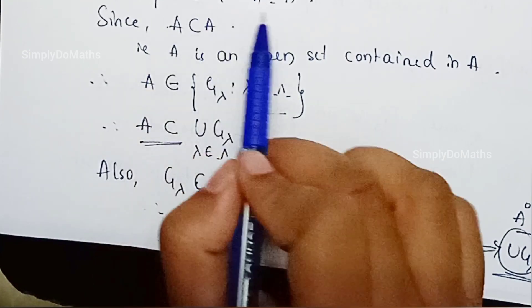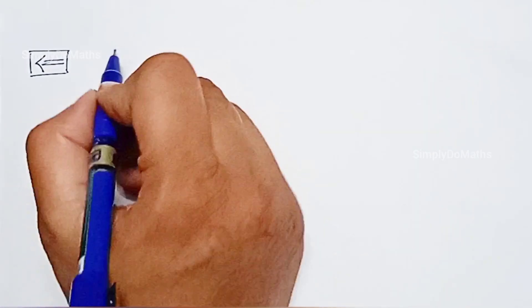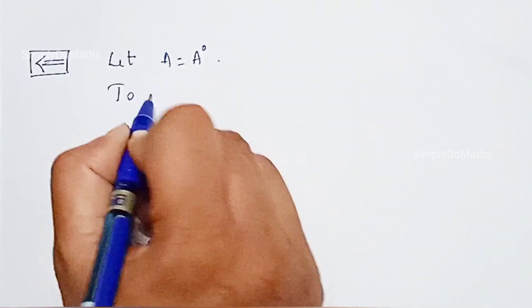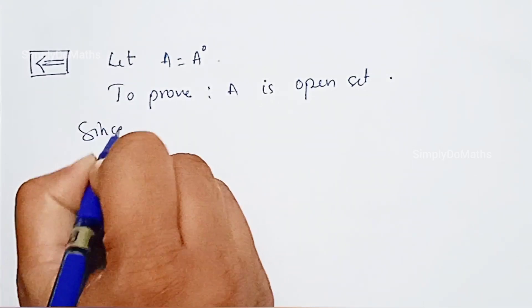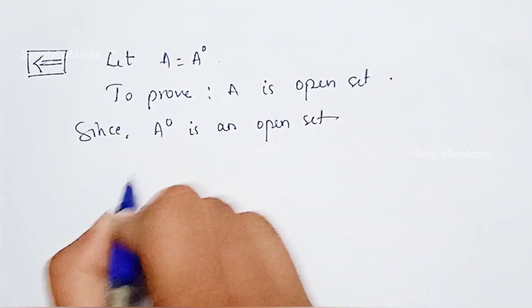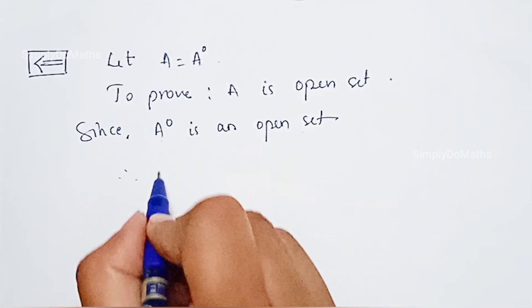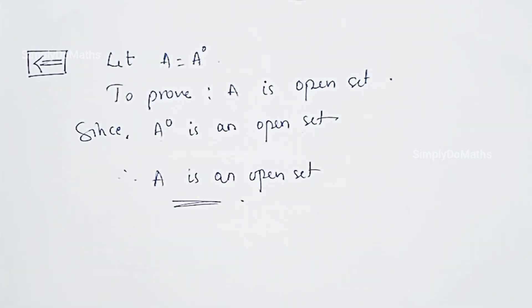For the converse part, given Aº equals A, we prove A is an open set. Since Aº is an open set by definition, and Aº equals A, therefore A is an open set. This proves the result. Let's learn some more concepts in our next video.